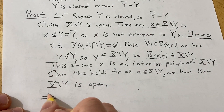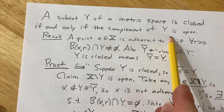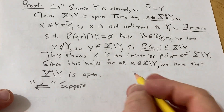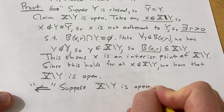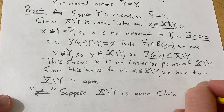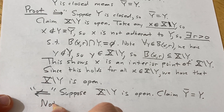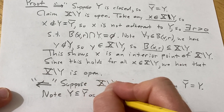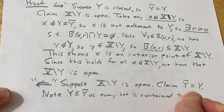Now let's prove the other direction. We suppose that the complement of Y is open, and we have to show that Y is closed. The claim is that Y-bar equals Y.